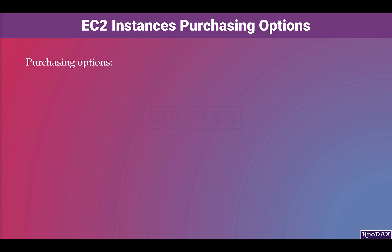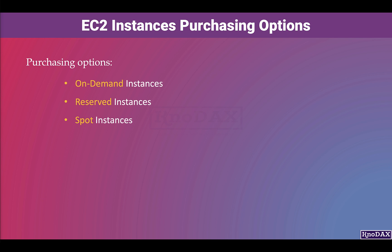When purchasing EC2 instances, there are different purchasing options. They are on-demand instances, reserved instances, spot instances, dedicated hosts, dedicated instances, and savings plans. In this video, we will talk about the on-demand purchasing option.